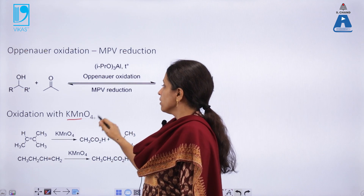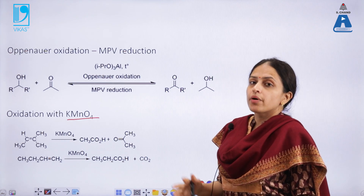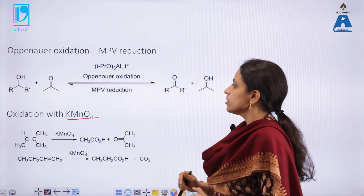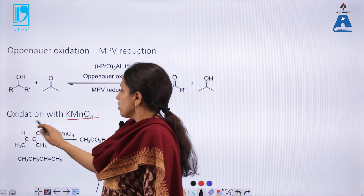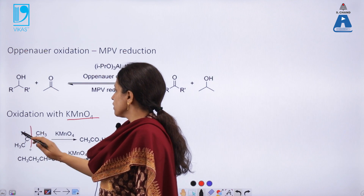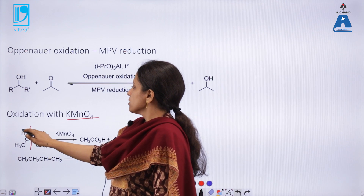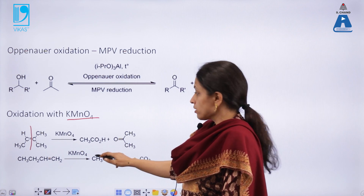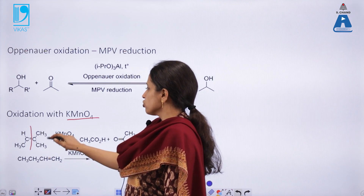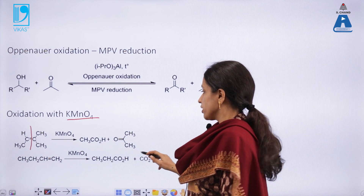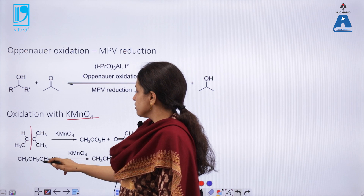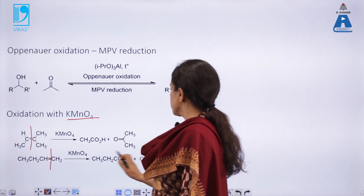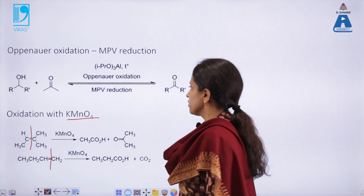Oxidation also happens with KMnO4 on olefins. For example, a branched or long-chain olefinic molecule can be oxidized to the corresponding carbonyl compounds. The carbon bearing a hydrogen atom is converted into the carboxylic acid product, whereas the carbon with no hydrogen atom is converted into the ketonic molecule. Where there is a hydrogen atom and no alkyl group, the product is converted to carbon dioxide.